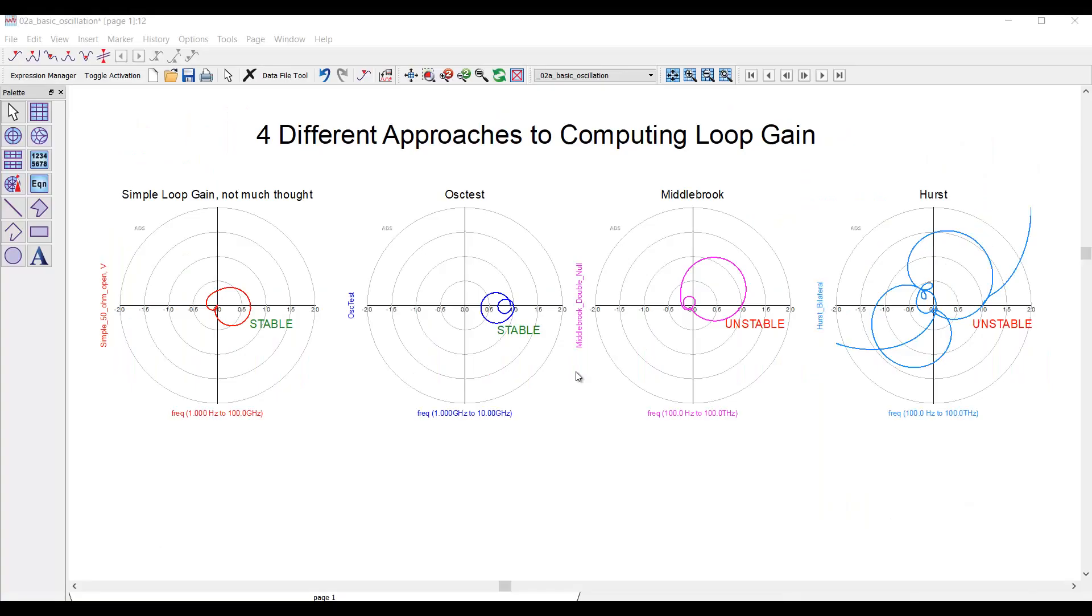Last time I walked through four different ways to derive loop gain, and each of them had their own pros and cons. At the end, we left off in a little bit of a confused state because the different approaches led to different answers as far as stability. Some implied the circuit was stable, others showed the circuit was unstable, and all in all, the net result was inconclusive, kind of like k-factor was before.